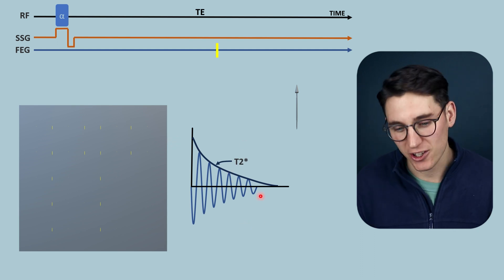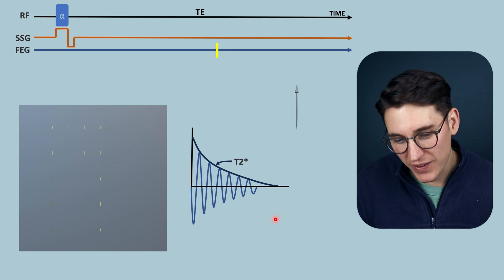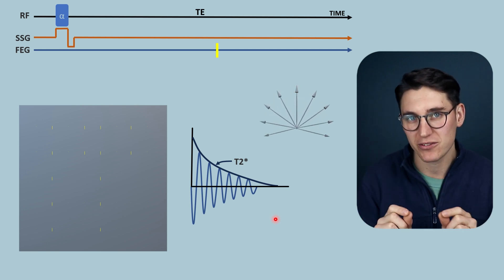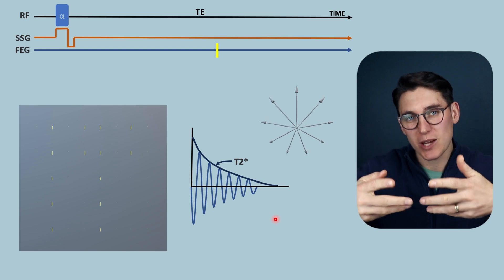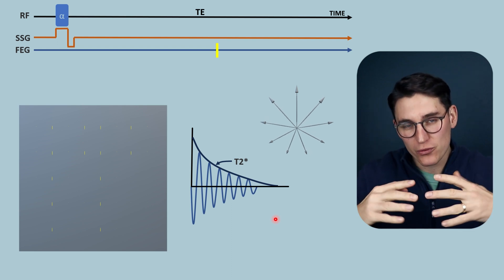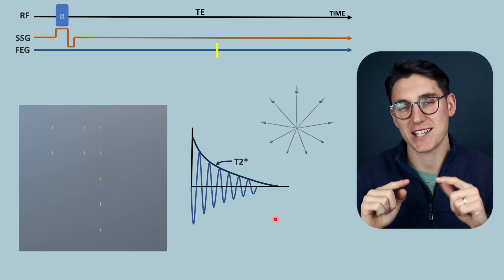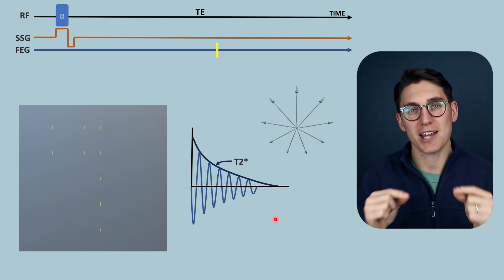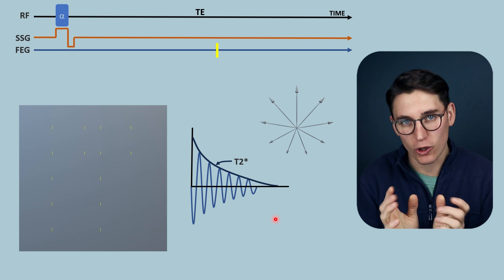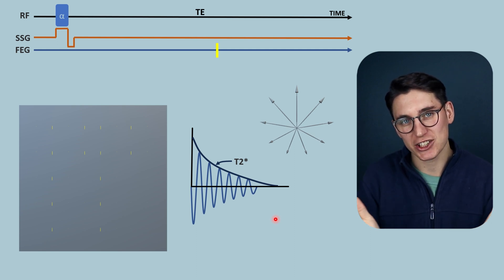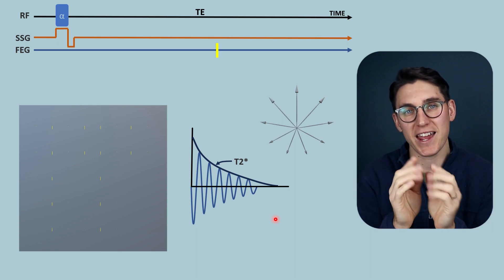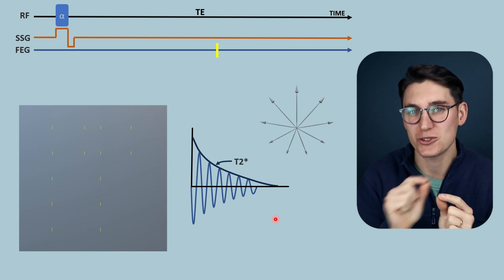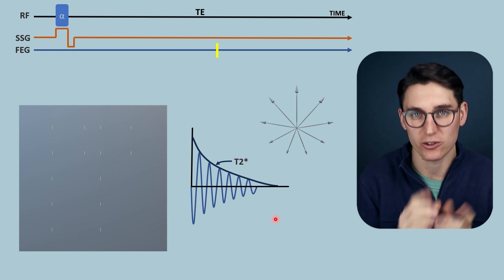Now this loss of signal is T2 star decay. When we looked at spin echo, we could rephase the spins that dephased due to local magnetic field inhomogeneities by using a 180 degree pulse to flip those spins, changing their orientation, and allowing the spins that dephased faster to lag behind the spins that dephased slower. That change in orientation allowed those spins to rephase and create a transverse signal much closer to the true T2 signal from within the slice.